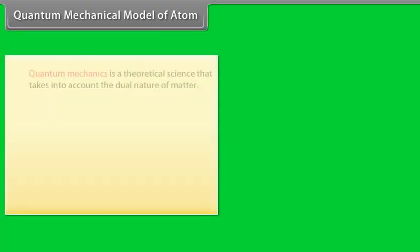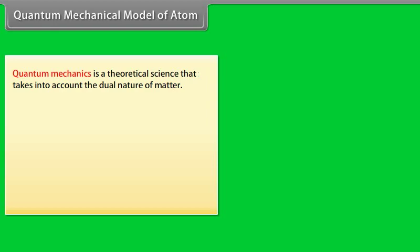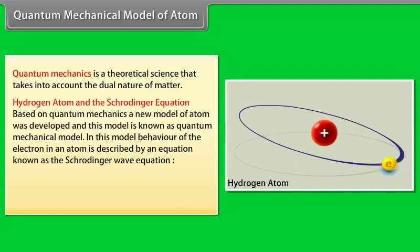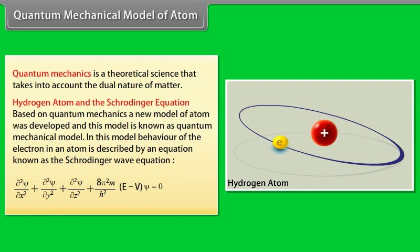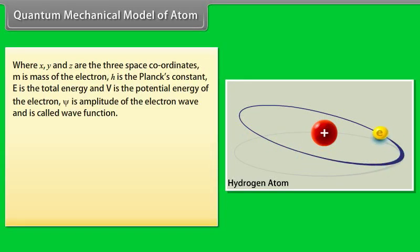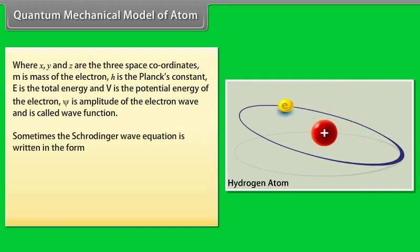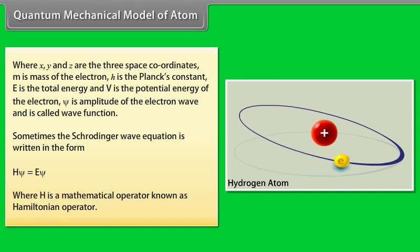Quantum mechanics is a theoretical science that takes into account the dual nature of matter. Based on quantum mechanics, a new model of atom was developed, known as the quantum mechanical model. In this model, the behavior of the electron in an atom is described by an equation known as the Schrödinger Wave Equation, where X, Y, and Z are the three space coordinates; M is the mass of the electron; h is Planck's constant; E is the total energy; and V is the potential energy of the electron. The Schrödinger Wave Equation is sometimes written as Ĥψ = Eψ, where Ĥ is the Hamiltonian operator.